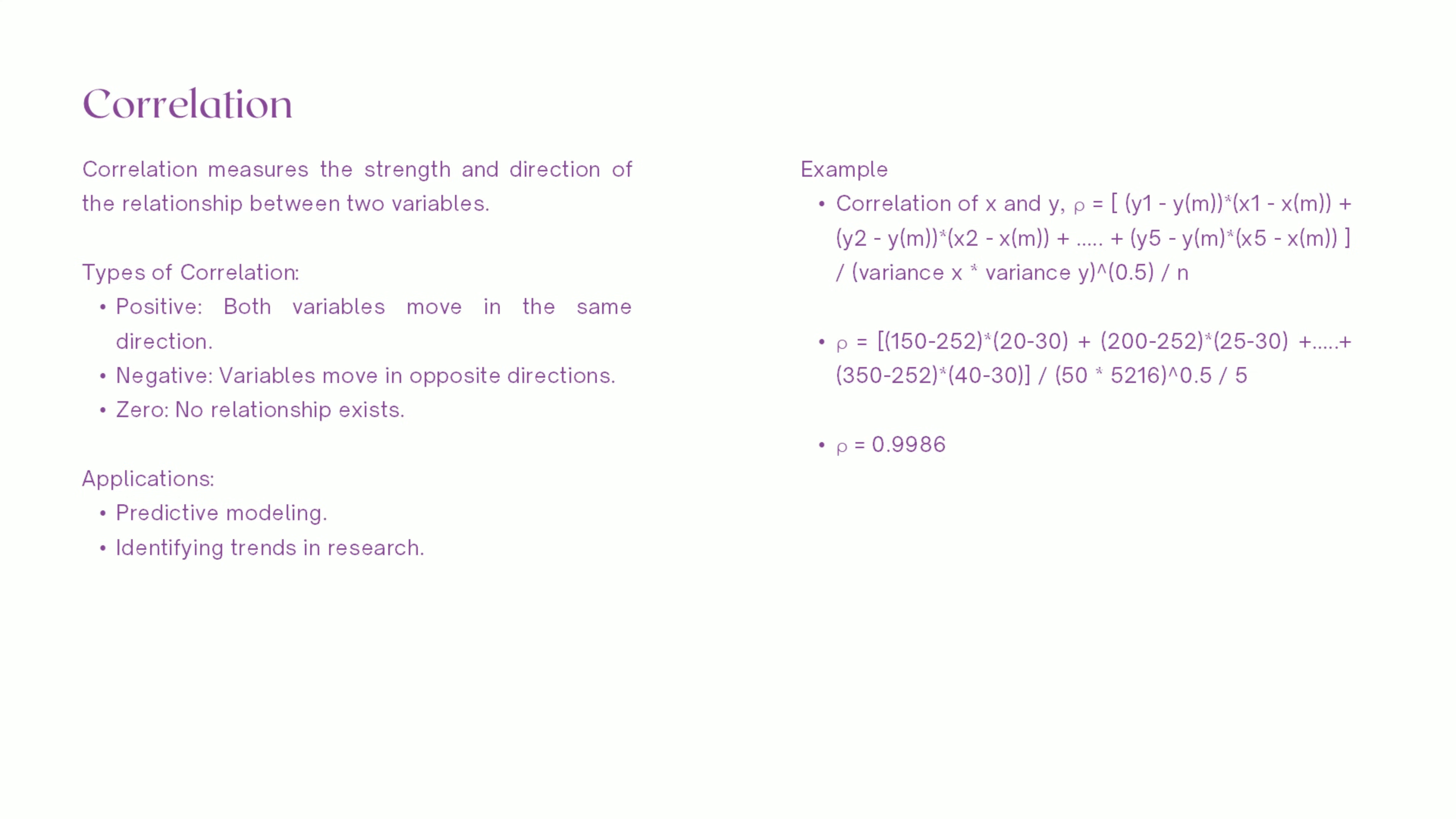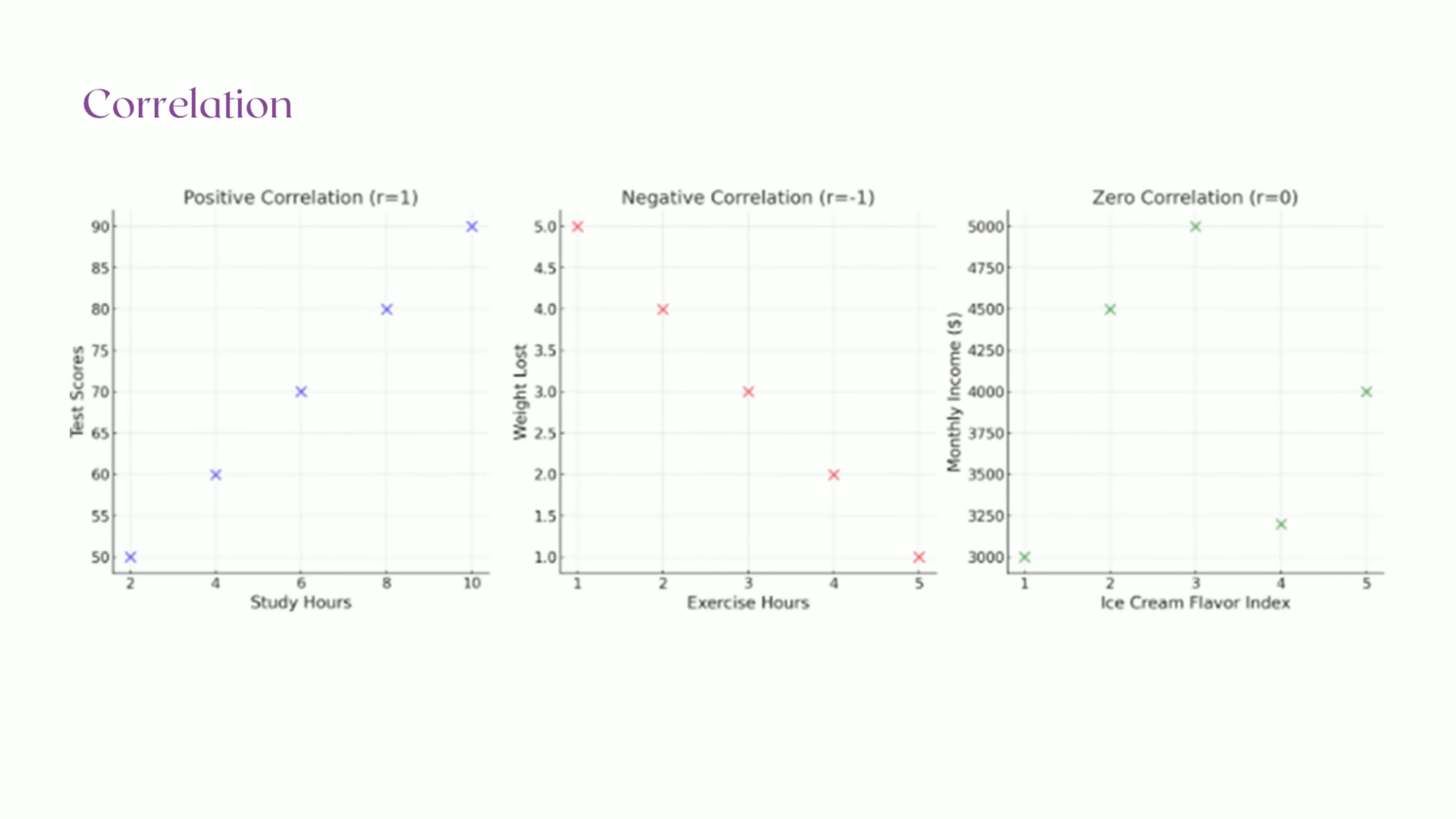Practical applications include predictive modeling where correlation helps build regression models for forecasting, and trend analysis where researchers use it to find connections, like diet and health outcomes. The correlation coefficient, denoted as rho, ranges from minus 1 to plus 1.